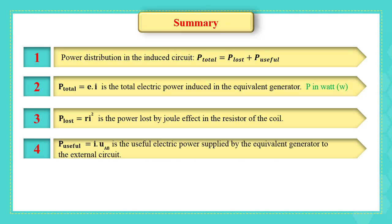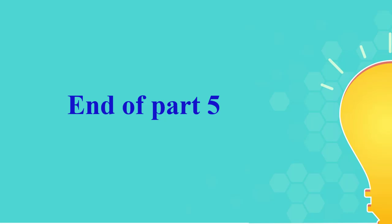4. P useful equals I multiplied by the voltage across AB is the useful electric power supplied by the equivalent generator to the external circuit. This is the end of chapter 8 electromagnetic induction. Study well and thank you for your attention.